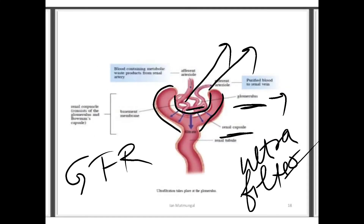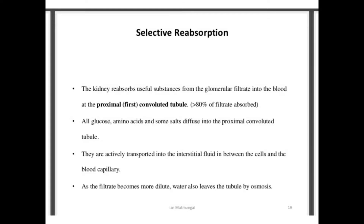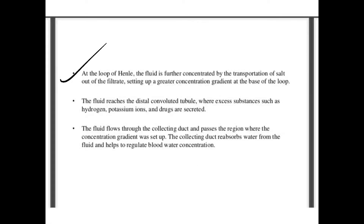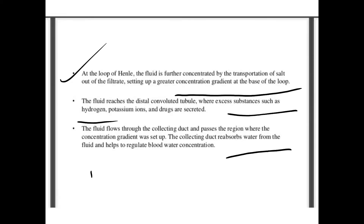During selective reabsorption, the kidney reabsorbs useful substances from the glomerular filtrate into the blood. At the PCT, all glucose, amino acids, and salts diffuse in and are actively transported back into the blood. Water also leaves the tubule by osmosis. At the loop of Henle, the fluid is further concentrated by transportation of salt out of the filtrate, setting up a greater concentration gradient. At the DCT, excess substances such as hydrogen, potassium, and drugs are secreted. Fluid then flows through the collecting duct, which collects water from the fluid and helps regulate blood water concentration.